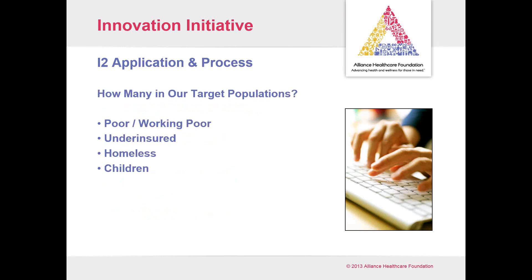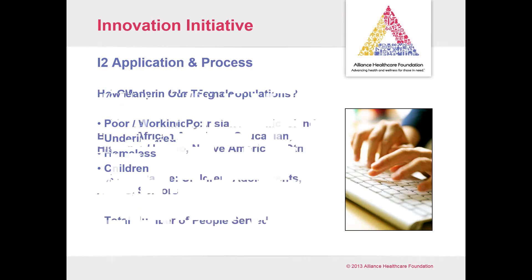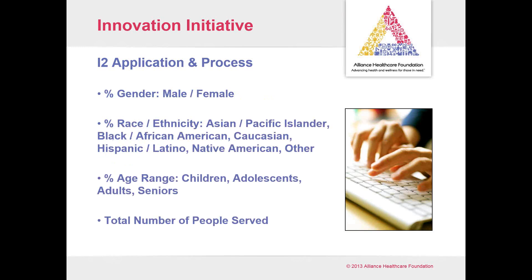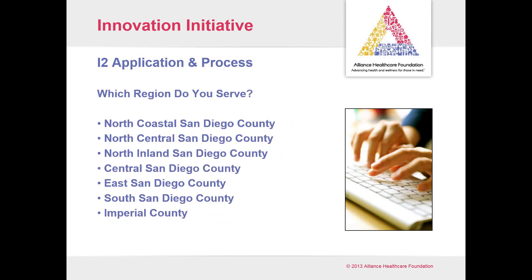As I mentioned, our target populations — there are questions about how many you expect to reach in those target populations. Again, you don't have to be working in all four. We do ask the percentage with regard to gender in those populations, the race and ethnicity you'll be reaching, the age range, and the total number of people served. We ask which region you serve so we know — we do spread out San Diego County in a bit more detail than Imperial County at this time.